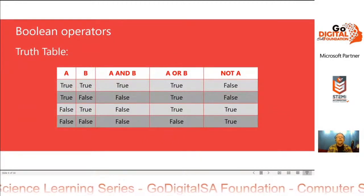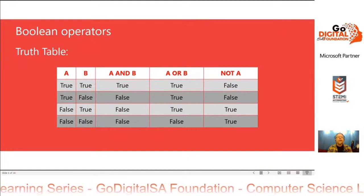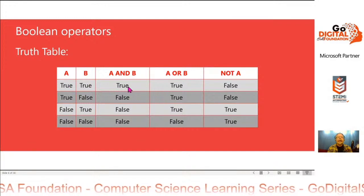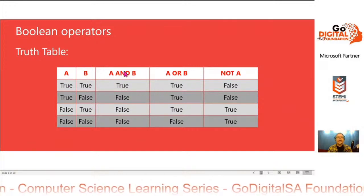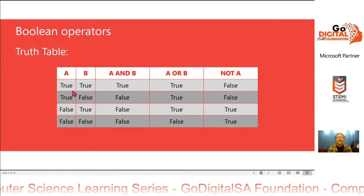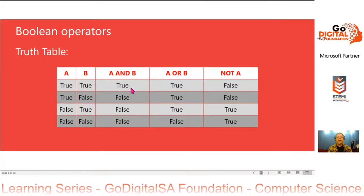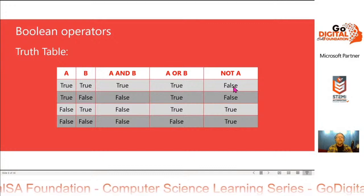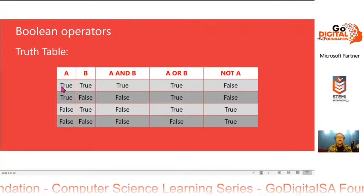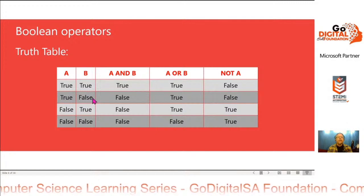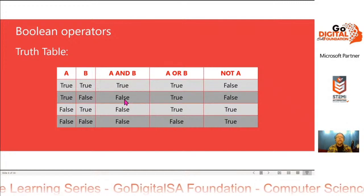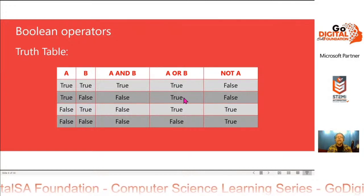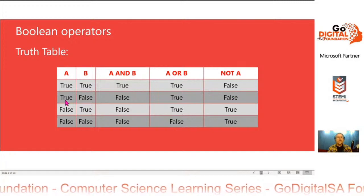We can use something called a truth table to see how this works. If we've got two values, A and B — if both are true, then A AND B is true when A and B are both true. A OR B is also true. And NOT A is false when A is true. If A is true and B is false, then A AND B is false. If A is true and B is false, then A OR B is true. And NOT A is still false, because A is still true.